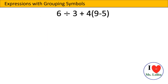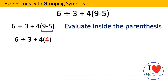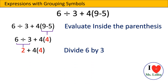Let us work on expressions with grouping symbols: 6 divided by 3 plus 4 multiplied by open parenthesis 9 minus 5 close parenthesis. We evaluate inside the parenthesis first — 9 minus 5 will give us 4. If there is multiplication and division, we work from left to right, so we divide 6 by 3, which gives us 2.